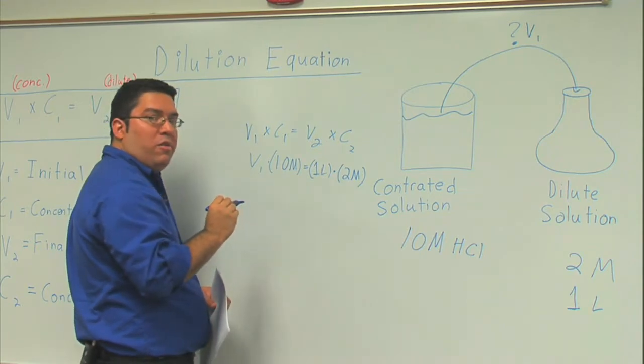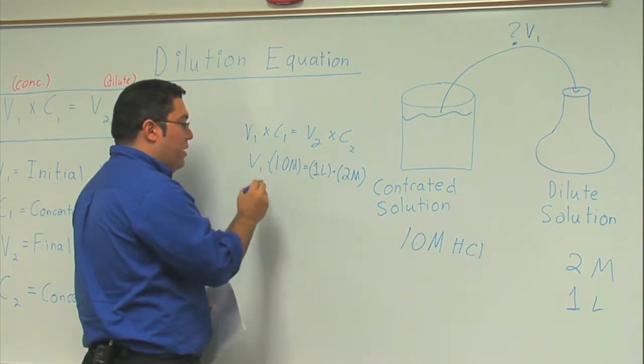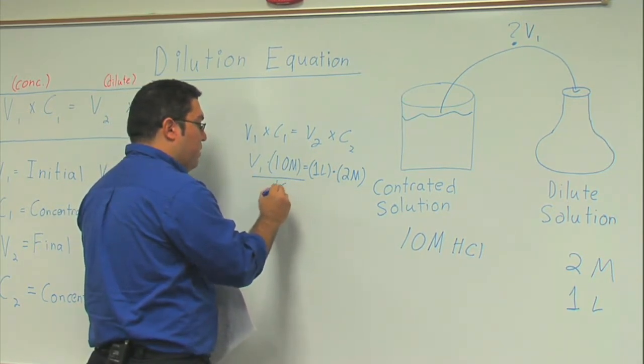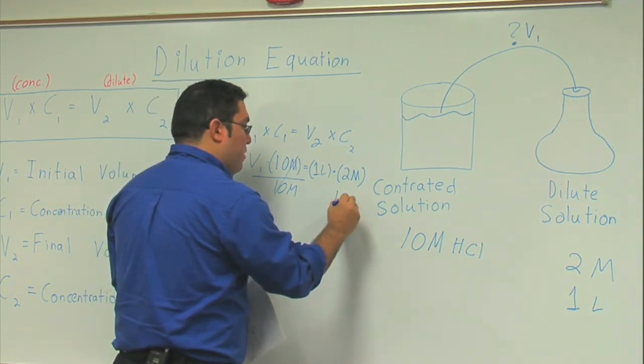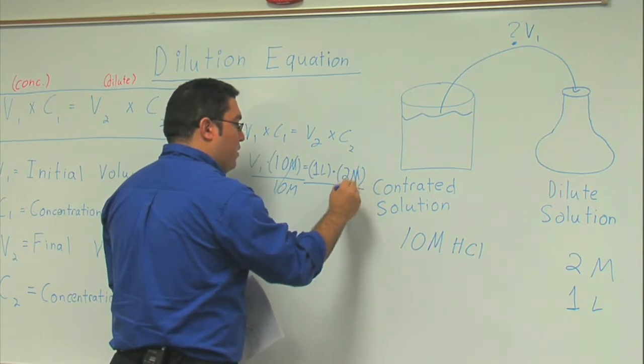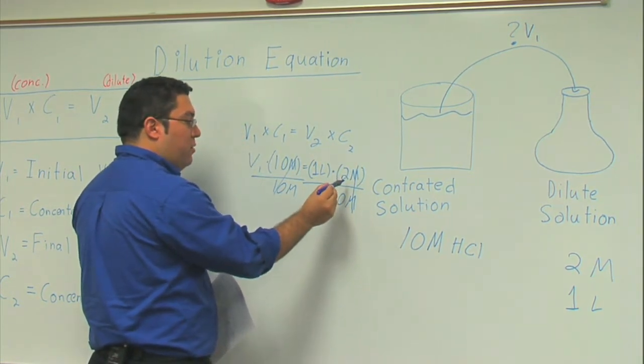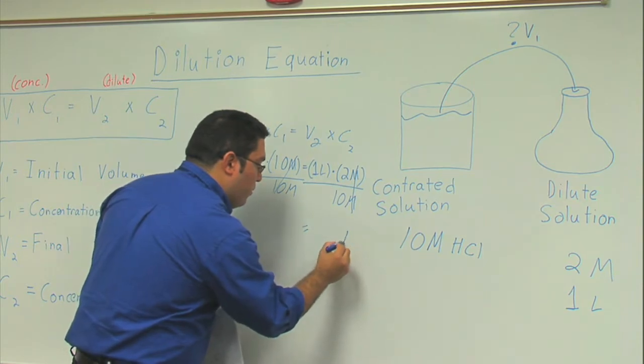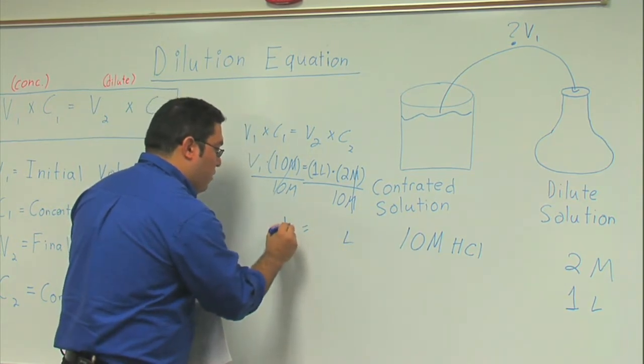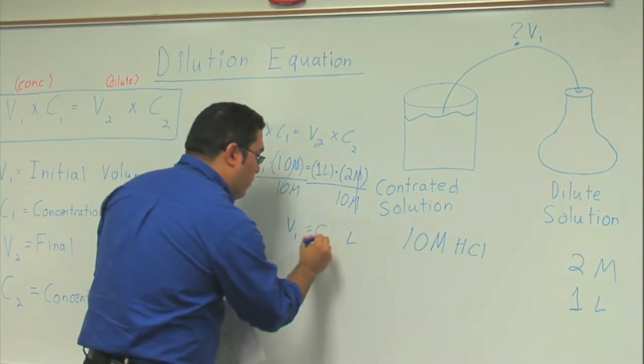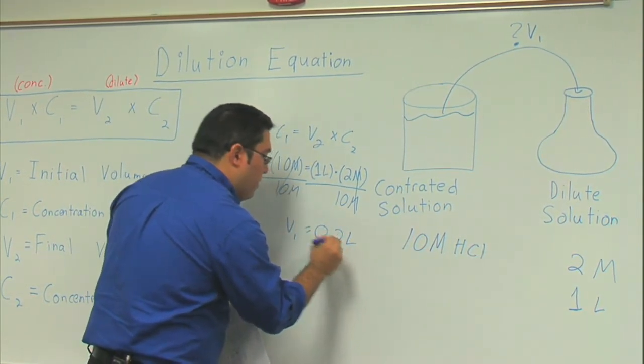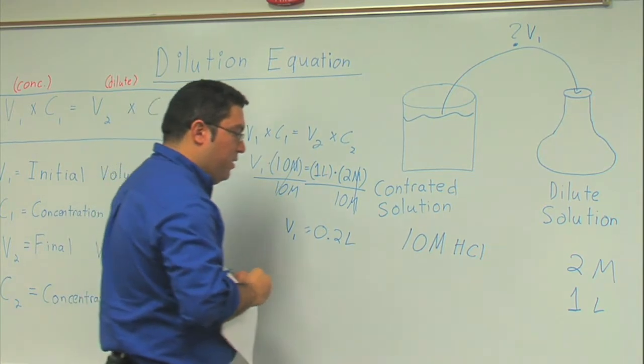So how do I solve for this equation? Well I need to just go ahead and divide both sides by 10 molar. When you bring it over here, notice that the units of molar cancel, so you're actually left with your answer in the correct units which is the units of liters. And it tells you when you do the math that your volume initial would simply be 0.2 liters.